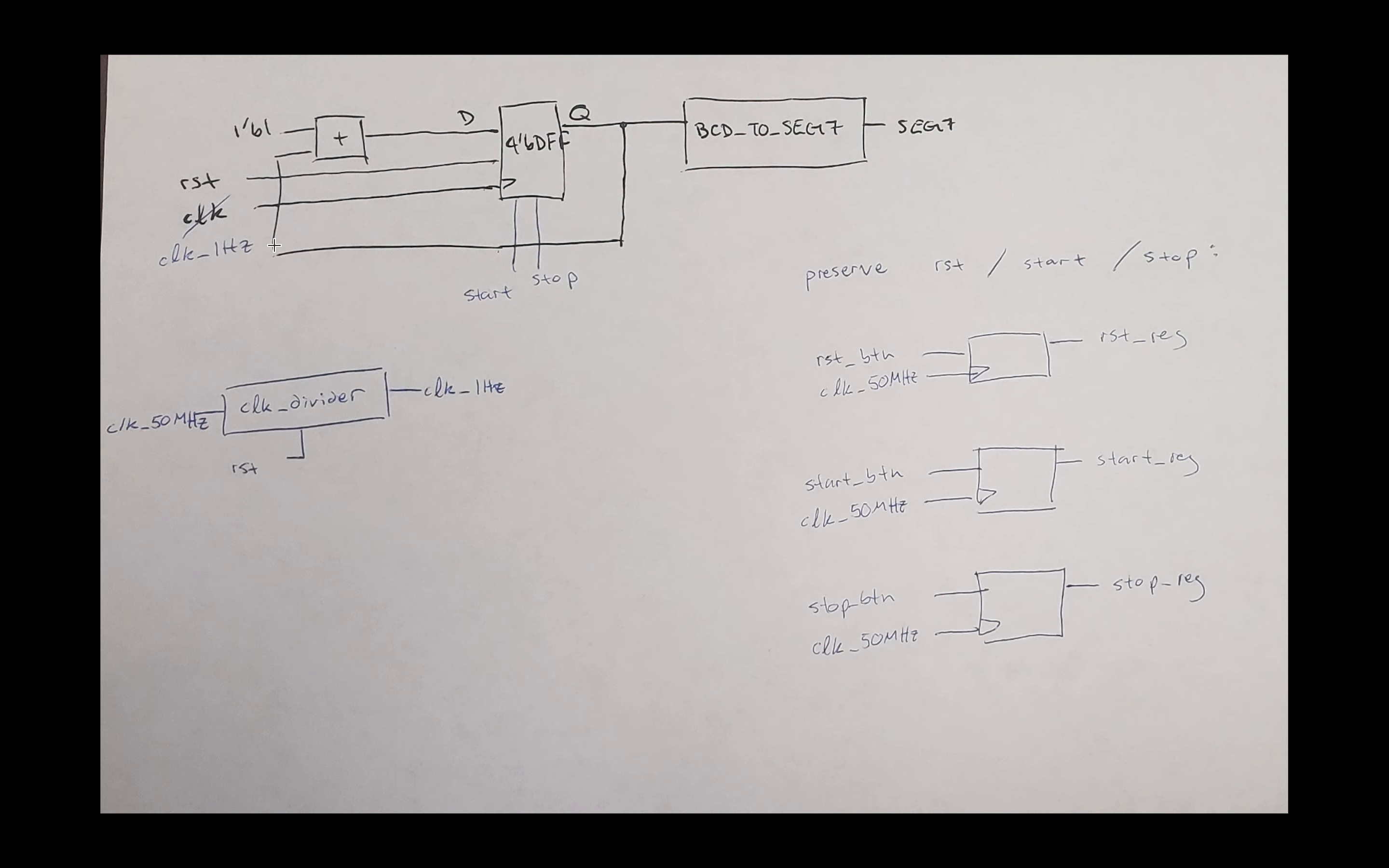So what you could do just to visualize if everything is in order, you do not worry about start and stop for now. Just build the clock divider, hook up the clock_1hertz to the clock of this week one. And what you should see when you download the program on the board is it just goes from 0 to 9 and then loops from 0 to 9 and 0 to 9.